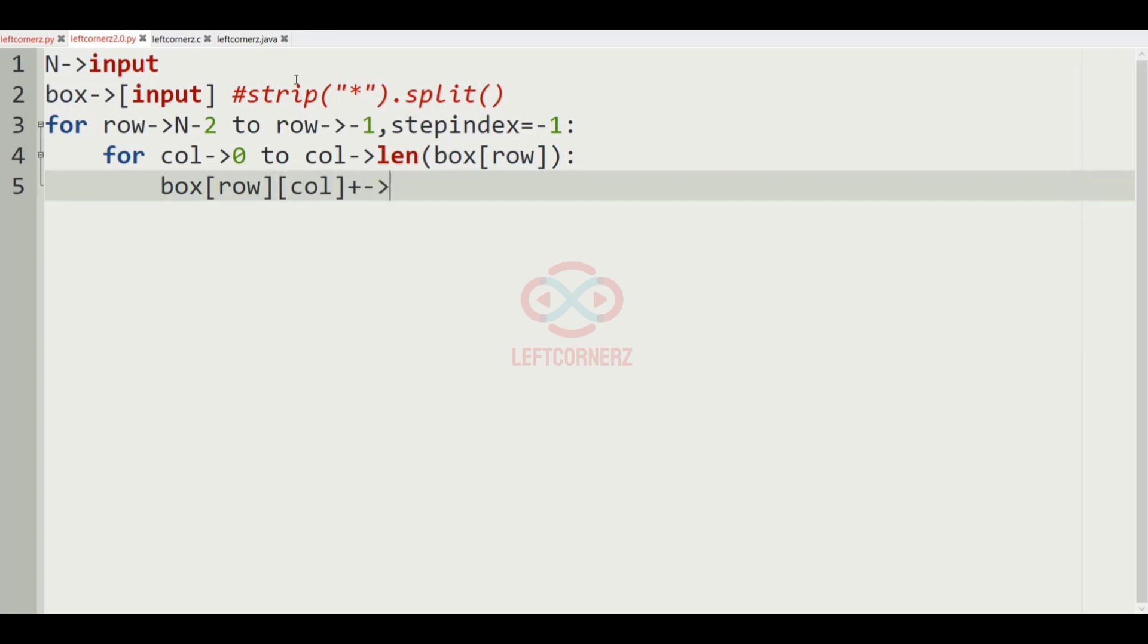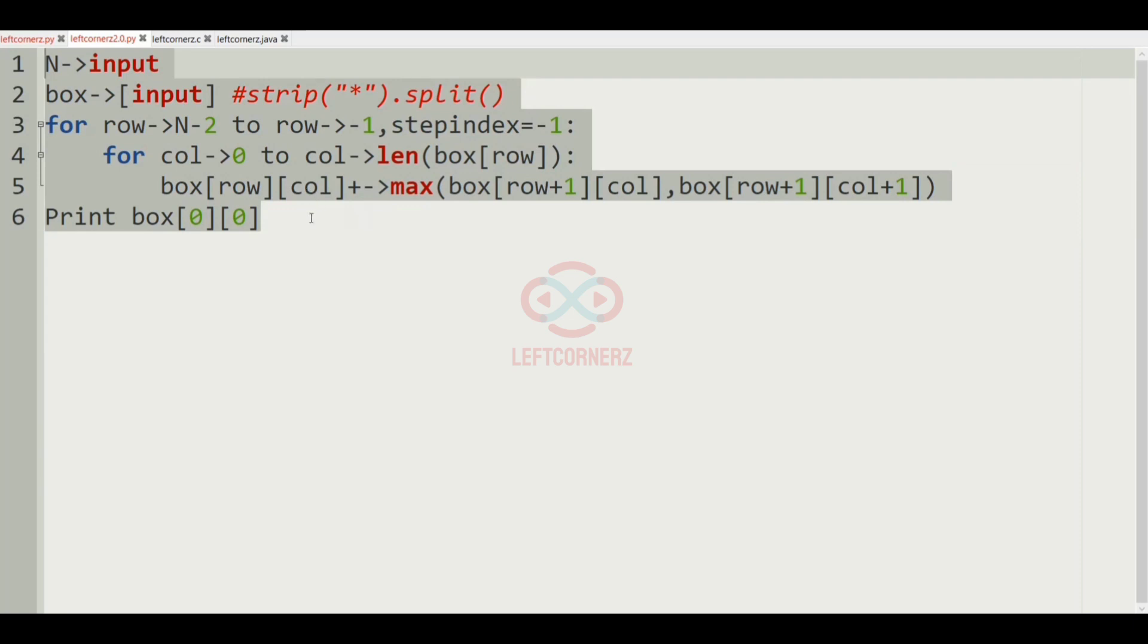Plus to the max of box of row plus 1 column. And here it is column. So here it is row plus 1, so box[row+1][column], comma box[row+1][column+1]. And finally we'll print the box[0][0], so this will give us the desired output.